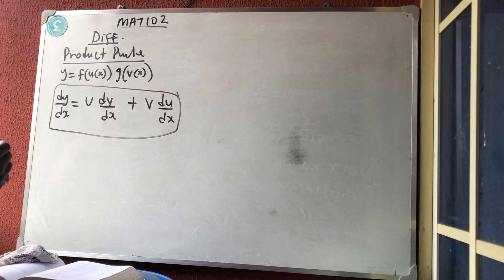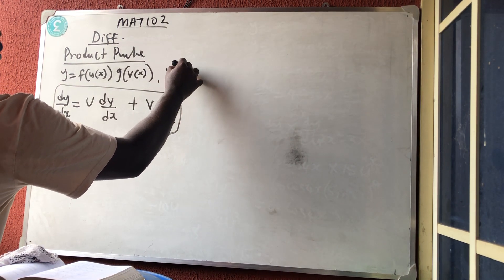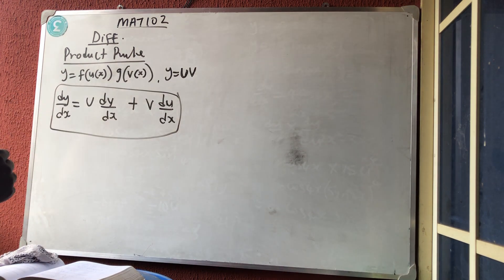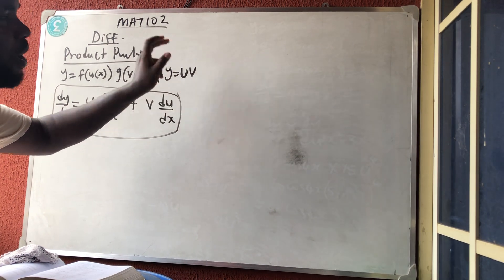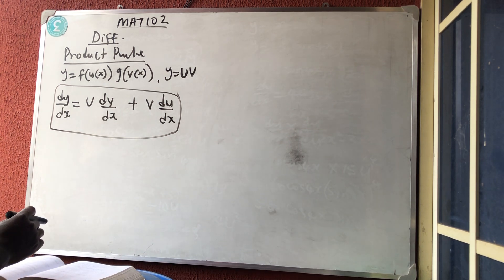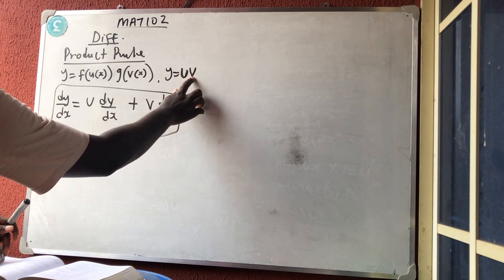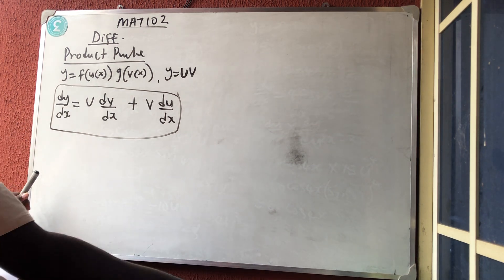The shortcut is simply: if y equals uv, then dy/dx = u·(dv/dx) + v·(du/dx). Leave the first one, differentiate the second one, plus leave the second one, differentiate the first one. In the chain rule we said differentiate the bracket then differentiate everything, but the product rule says leave the first, differentiate the second, plus leave the second, differentiate the first. An example will help us.